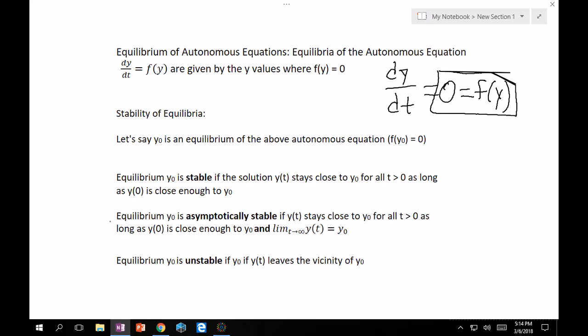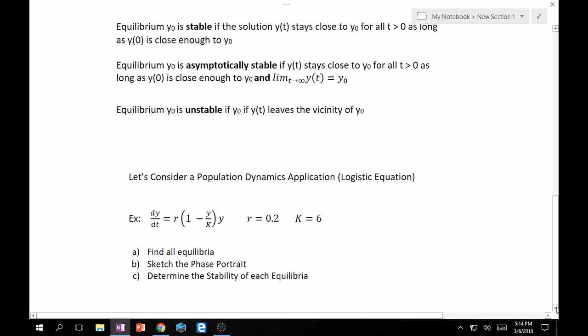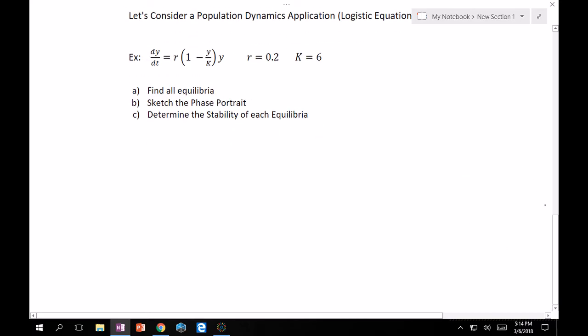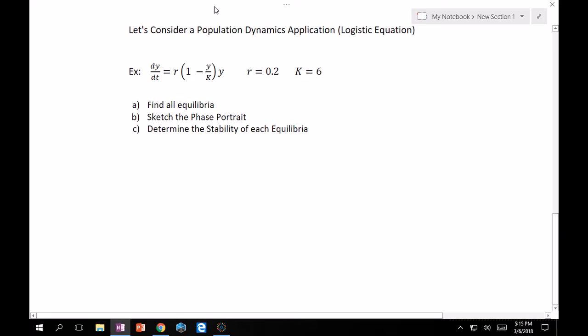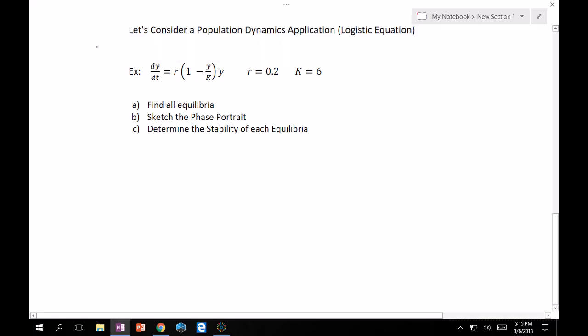Finally, equilibrium y_0 is unstable for y(0) if y(t) leaves the vicinity of y_0. So what that means is, if the solution y(t) is going away from y_0 as t is greater than 0, then it's unstable. It's not going to come back to or stay close to y_0. So it's a lot of words. Let's just do an example, and a lot of this should make a lot of sense.